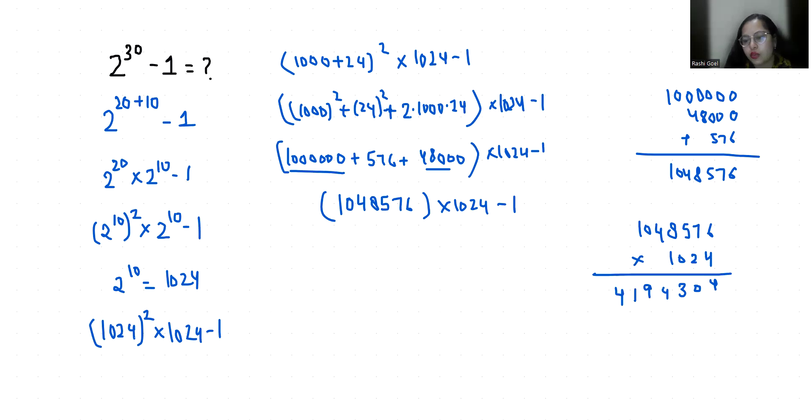Now multiply with 2. 2 times 6, 12. 2 times 7, 14. Carry over 1, 15. 5 times 2, 10. So 1 and 1, 11. 8 times 2, 16 and 1, 17. 2 times 4, 8 and 1, 9, 0, 2.